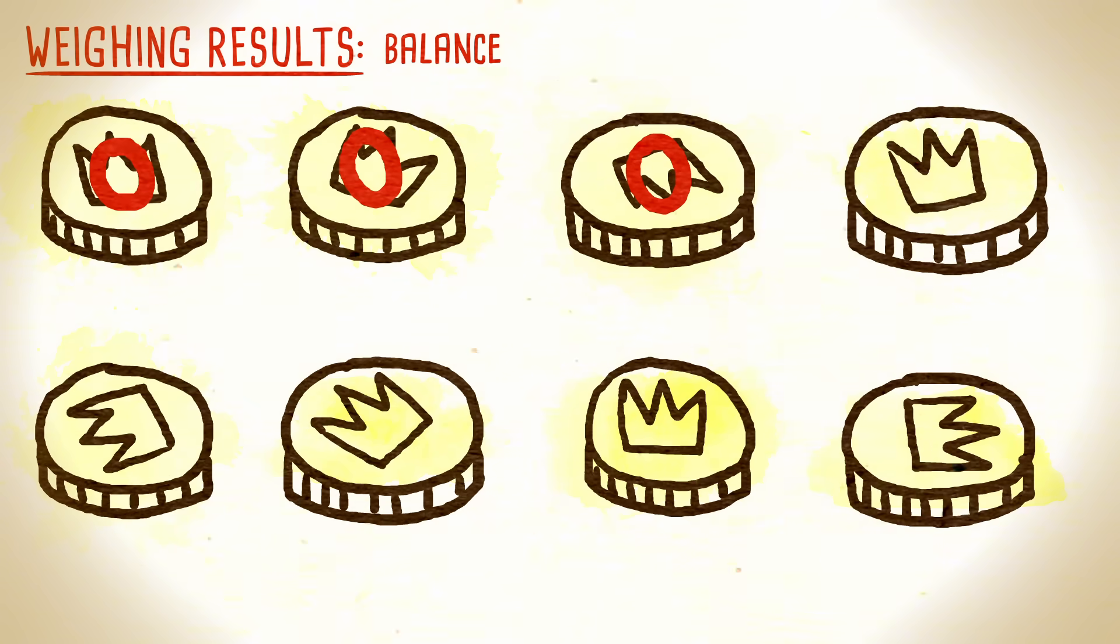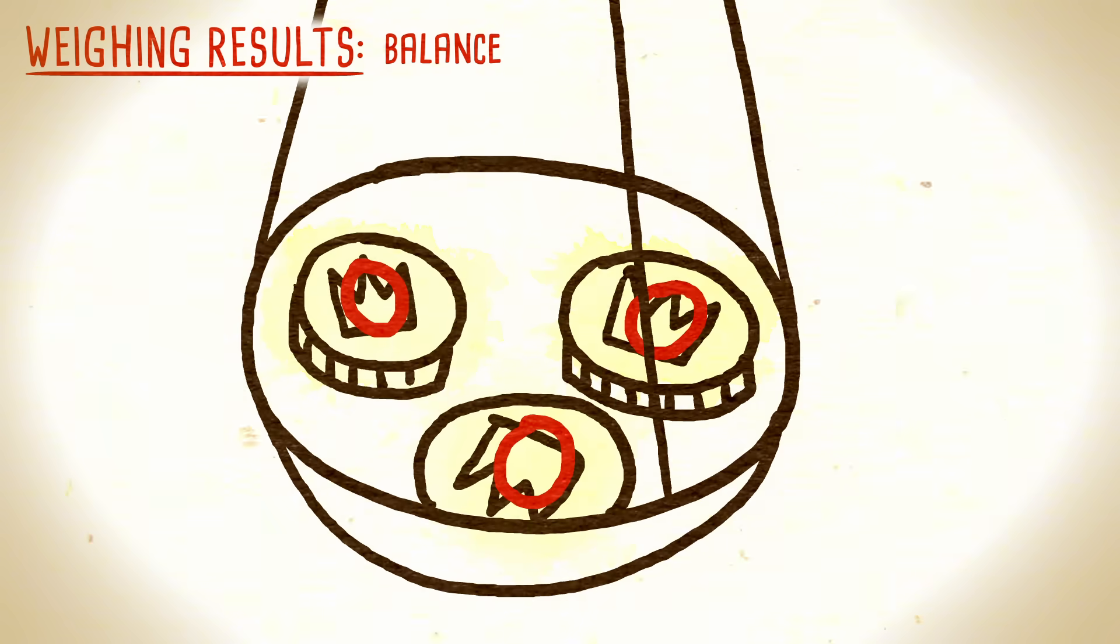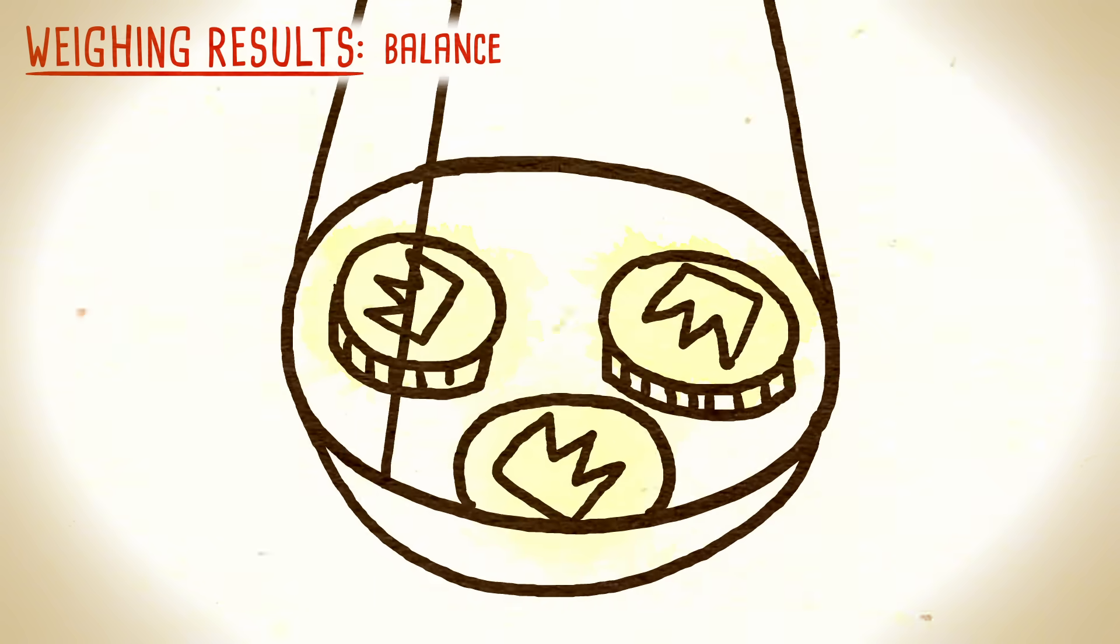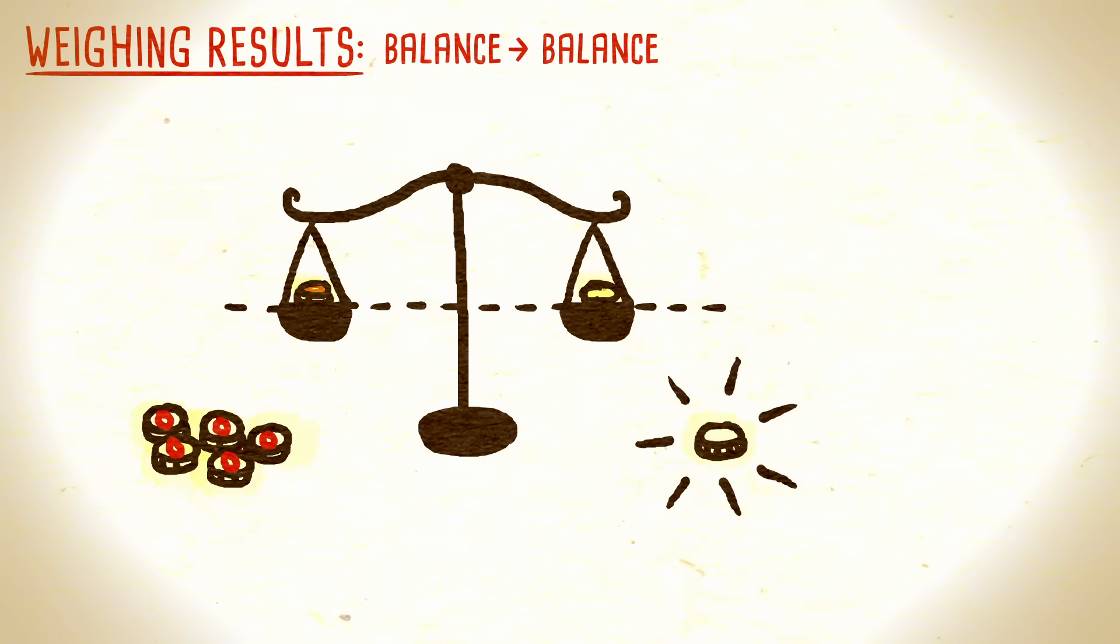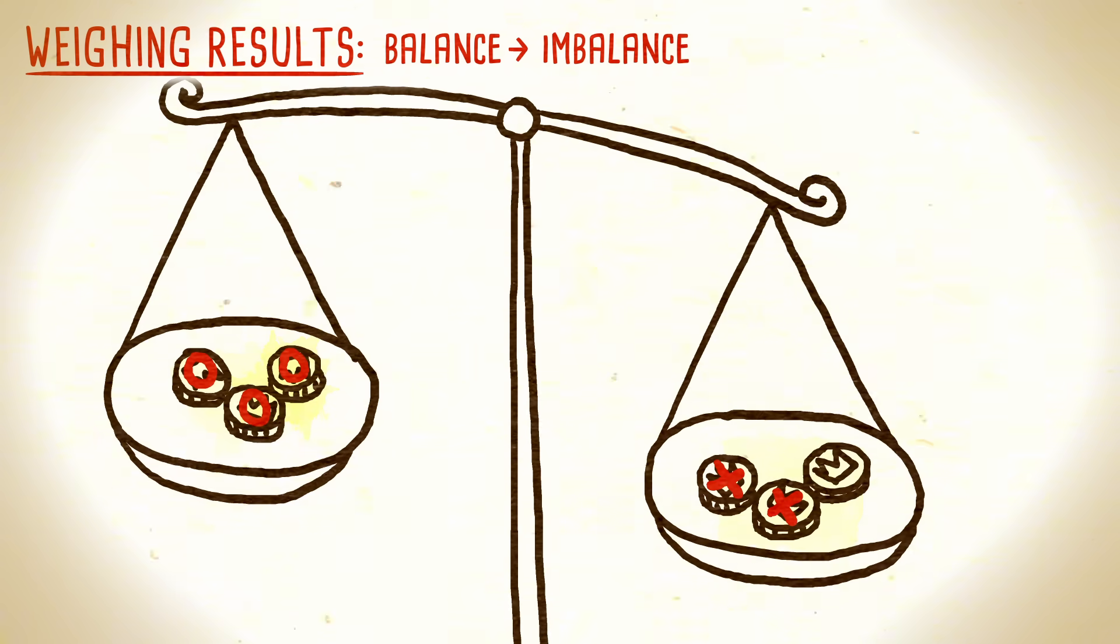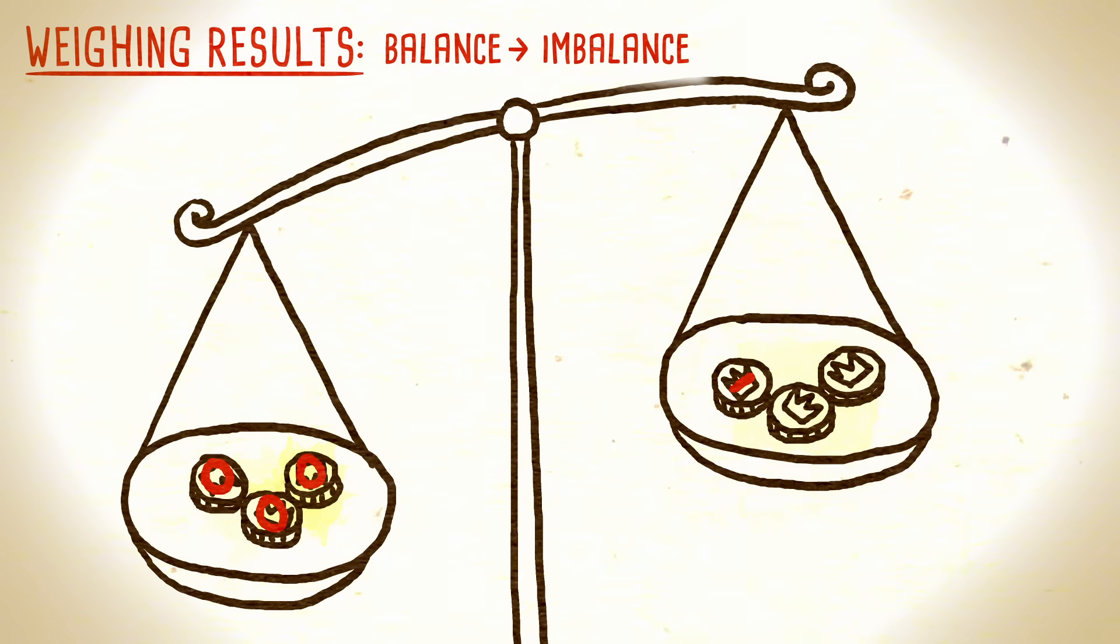Mark the eight authentic coins with a zero. Now take three of them and weigh them against three unmarked coins. If they balance, the remaining unmarked coin must be the fake. If they don't, draw a plus on the three unmarked coins if they're heavier, or a minus if they're lighter.